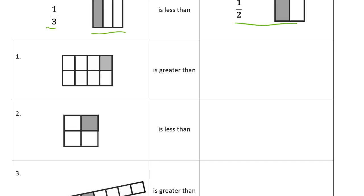So here we have to label this. This is how many parts? One, two, three, four, five, six, seven, eight. There are eight parts, so we're talking about eighths, and there's one of them. So it's one-eighth. Let's write that — one-eighth is greater than...